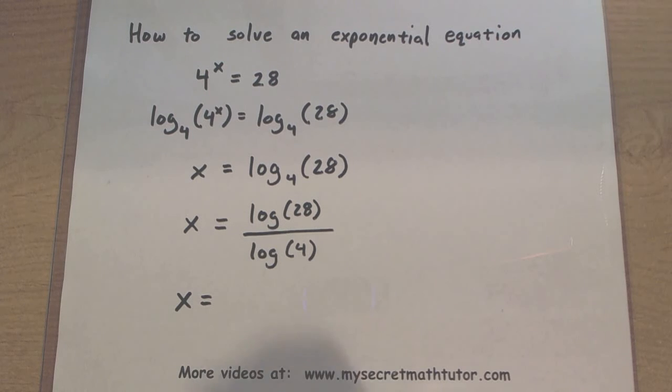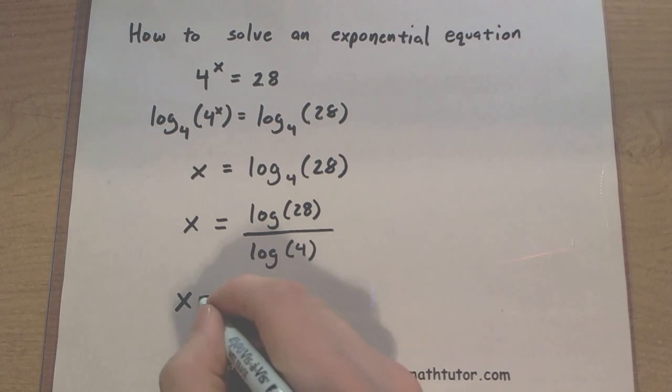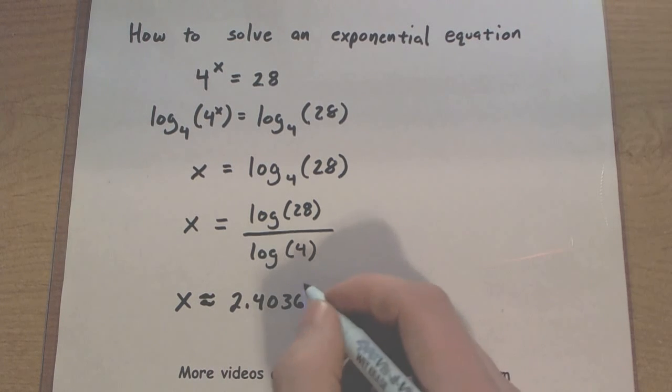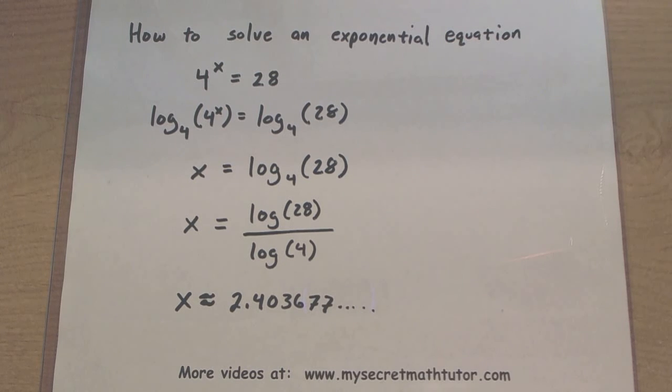Alright, here's what it gives me. So x is equal to, well I should say about equal to, 2.403677, and it just keeps on going. So this is the decimal approximation answer for the equation.